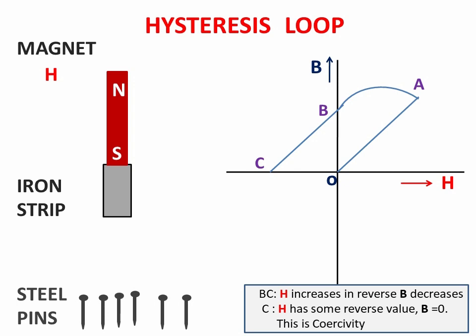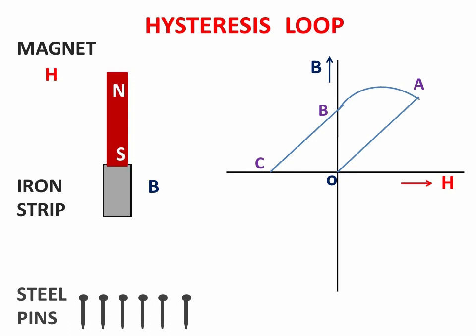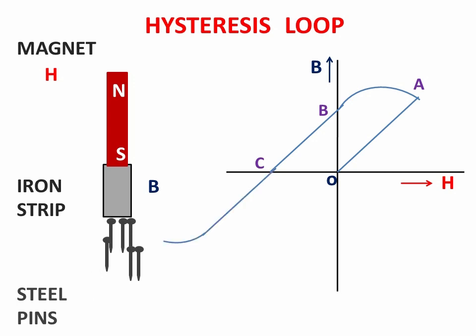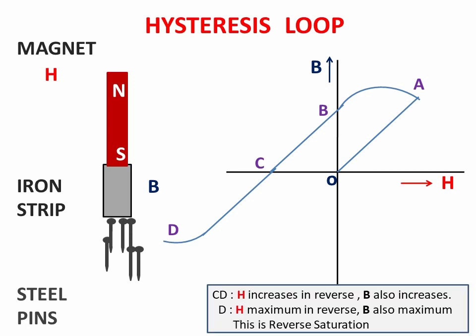When the bar magnet touches the iron strip again, the iron strip becomes a magnet and the magnetic field B is developed. Due to the magnetic moment, it reaches maximum magnetic induction — all the pins are attracted by the strip. This is called saturation in the reverse magnetic field, explained in the BH curve as point D. At D, H is maximum in the reverse direction and B is also maximum. This point is called reverse saturation.